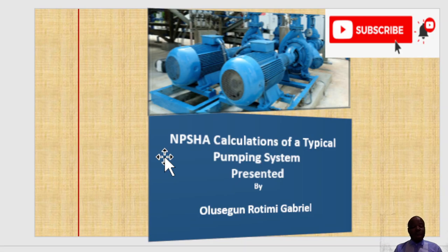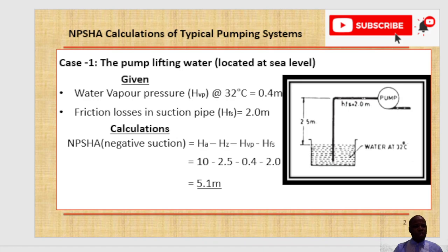If you are new here, please go through the channel to see the previously uploaded sessions on pumping systems. Today we are going to be looking at various calculations based on different scenarios for obtaining NPSHA, starting with the first case: a centrifugal pump lifting water from an underground storage tank or underground reservoir, with the pump located at sea level.